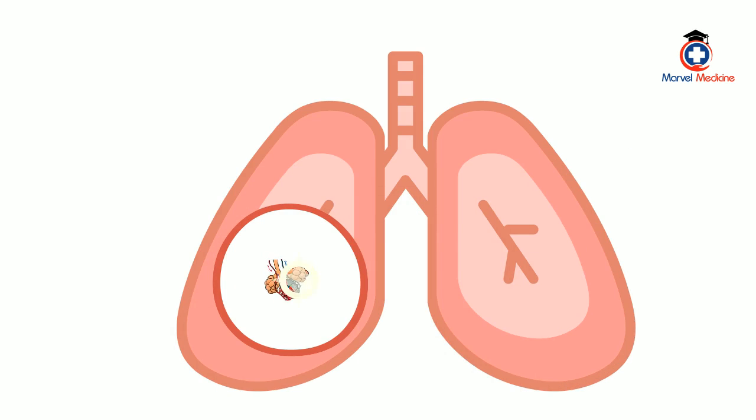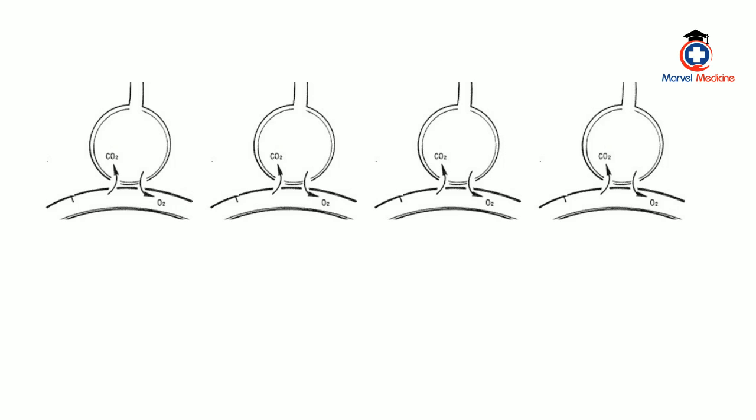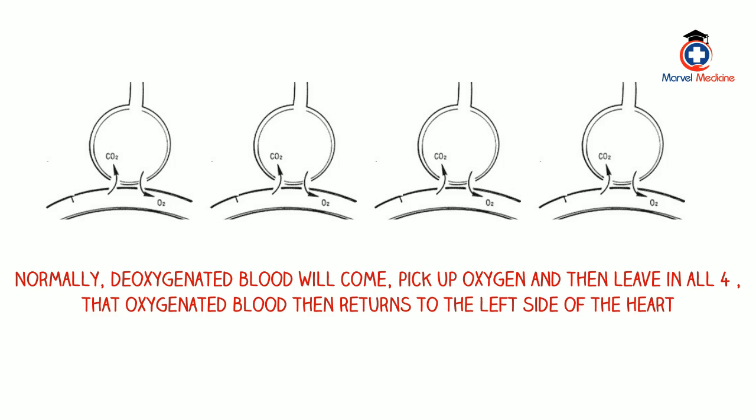Now, look at the lungs and capillaries a little bit closer. Let's take, for example, four capillaries and four alveoli. Normally, deoxygenated blood will come from the left side, going towards the right, pick up oxygen, and then leave in all four. That oxygenated blood then returns to the left side of the heart to go to the rest of the body.